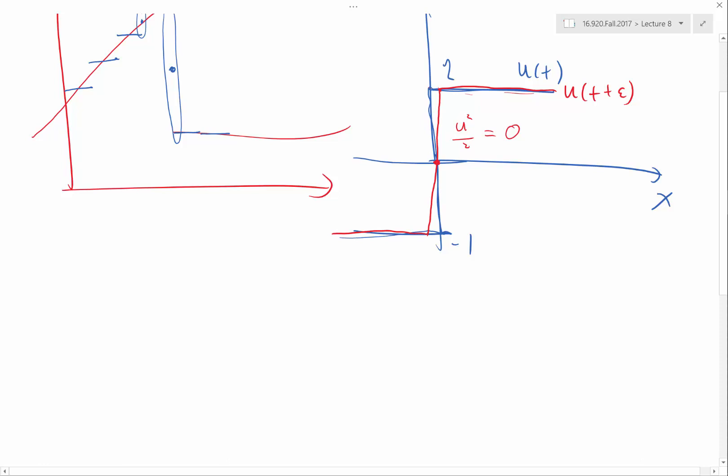So at the original point of this discontinuity, the solution now is well-defined. It's no longer a discontinuity. The solution is actually u equal to 0. And the flux, which is defined as u squared over 2 for Burger's equation, is going to be 0.